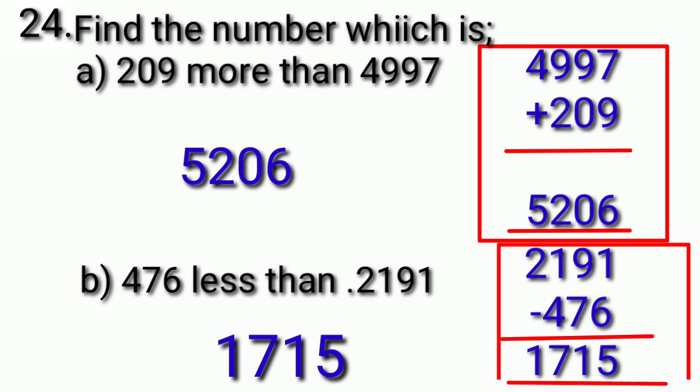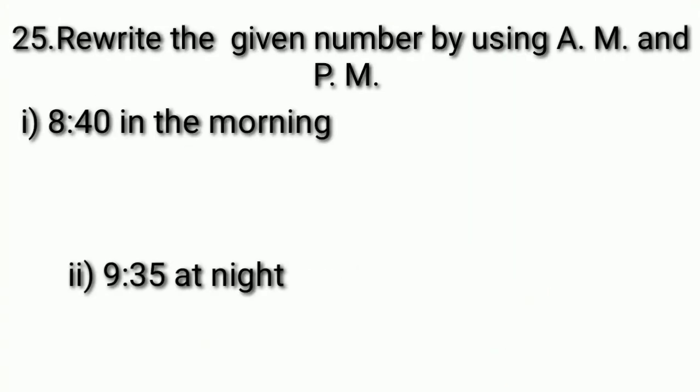This subtraction can also be done in the notebook as shown. Question 25, part A: rewrite the given numbers using AM and PM. We use AM to show time from 12 midnight to 12 noon, and PM to show time from 12 noon to 12 midnight. In the first part, the time is 8:40 in the morning, so we write it as 8:40 AM.